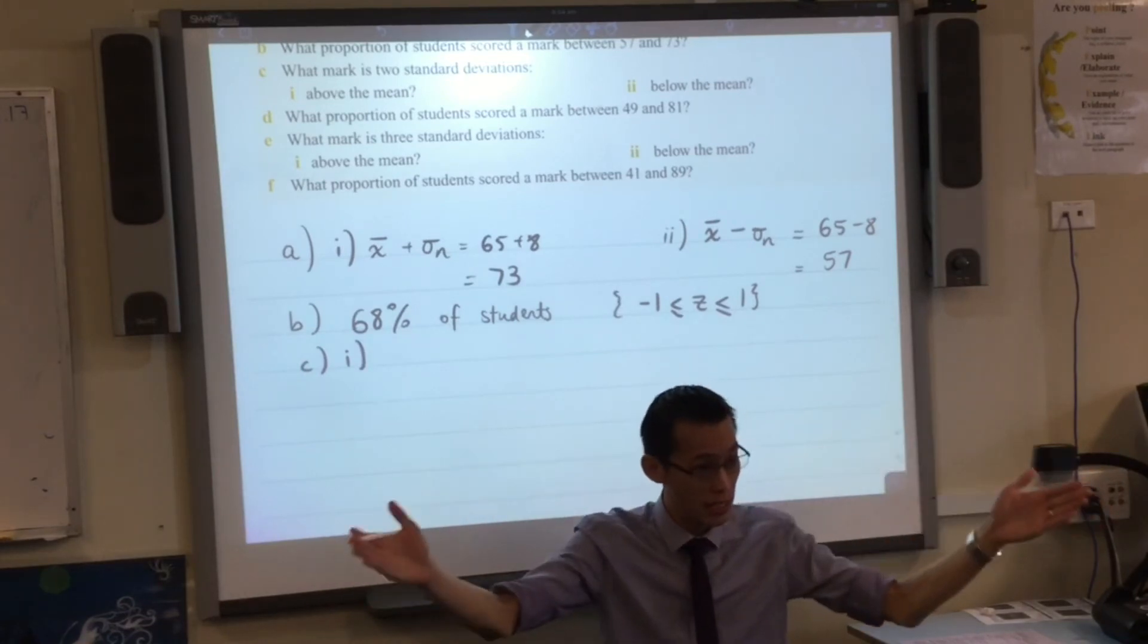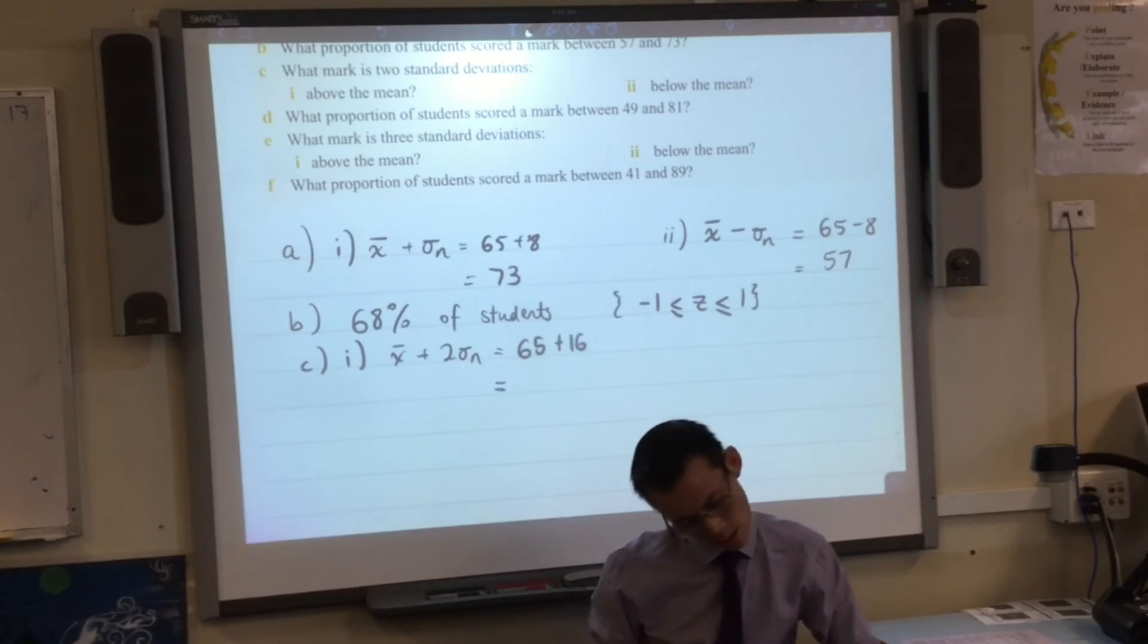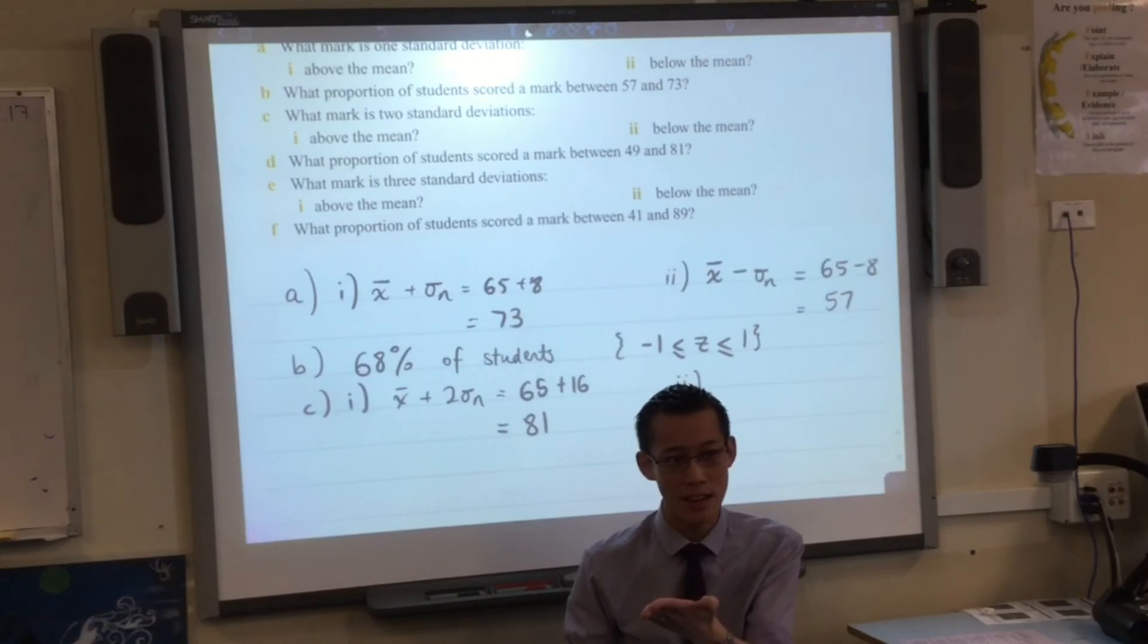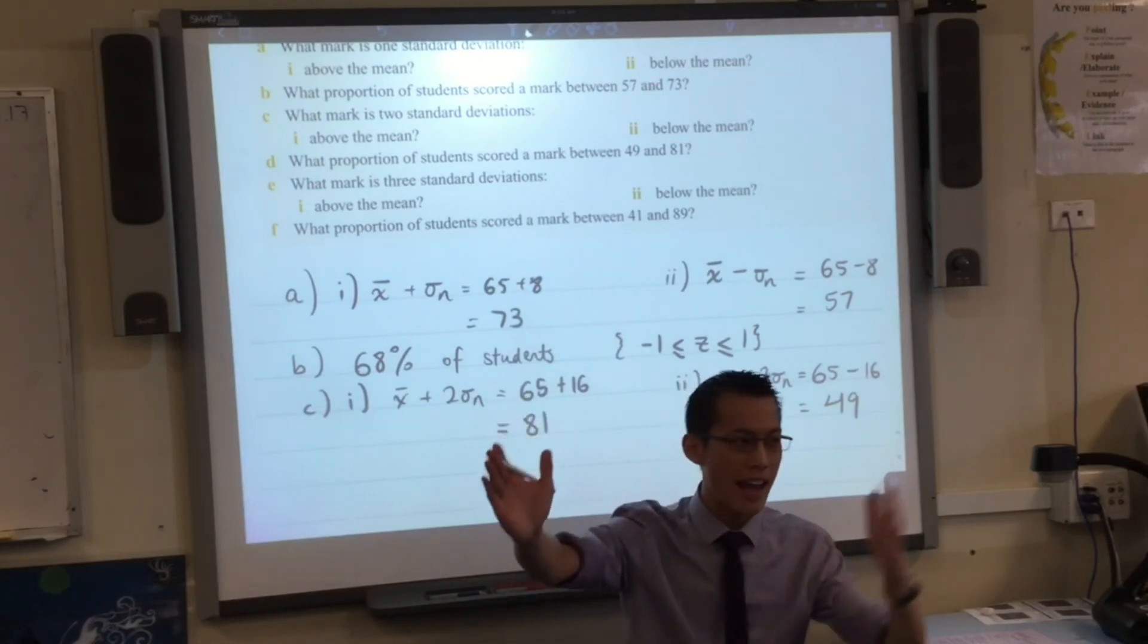Okay, this time for part C, they just want us to go further. Can you go two standard deviations away? So this is x̄ plus two of them, right? So that's 65 plus what? 16. Very good. So that looks to me like it's 81. And for part 2, it looks like they want us to go below. So instead of adding 16, I'm going to take it away. 65 take away 16. That's going to be, I can do this. So that's 10 would be 55. And then another 6 from that is 49. Nailed it.